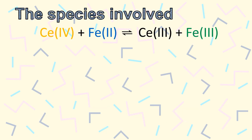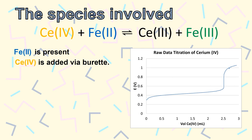Here's the overall reaction you'll be working with. It can be a challenge to understand the species involved, so let's take a moment to go over the chemistry. Iron(II) is present before the cerium(IV) is added from the motorized burette. By monitoring the potential as a function of cerium(IV) solution volume, we get a curve like this.